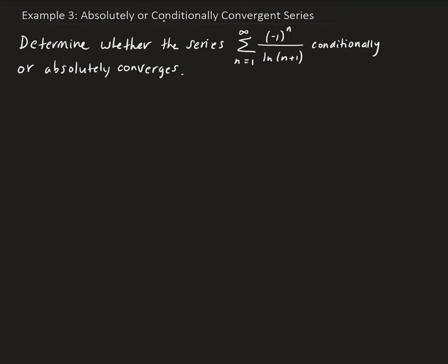In this example, we want to determine whether this series conditionally or absolutely converges. Since this is an alternating series, we're going to apply the alternating series test to see if this series converges or not.